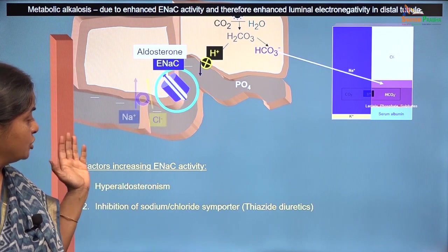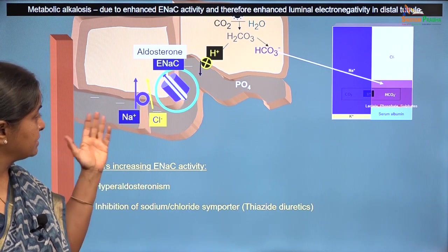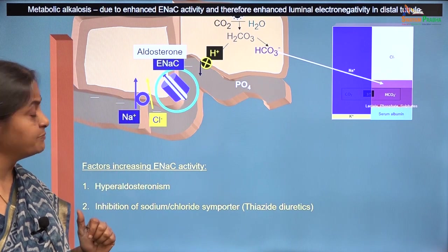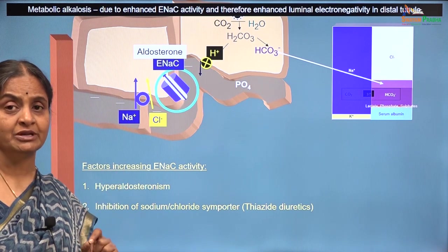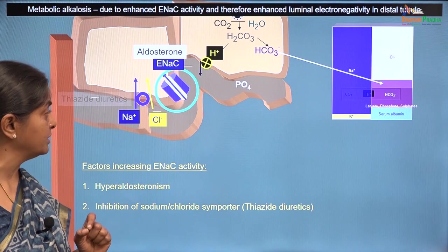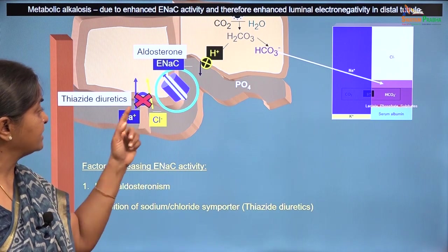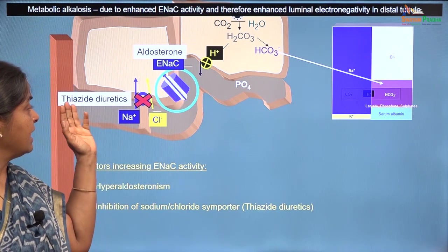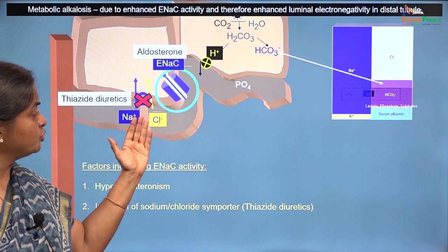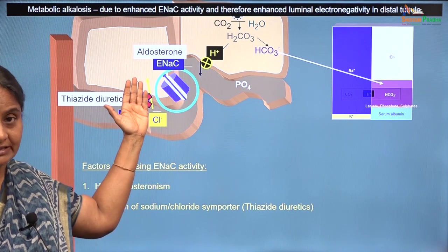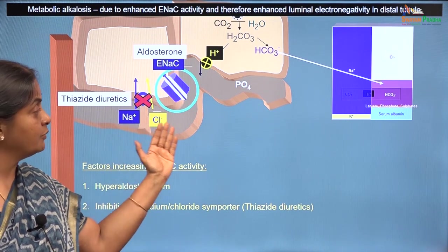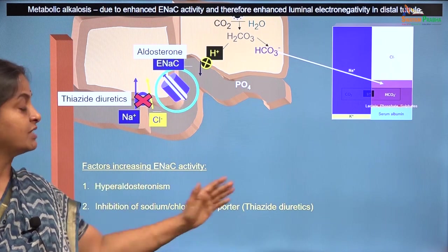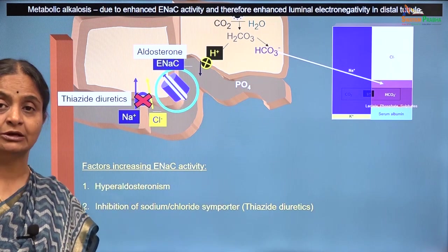The second cause is inhibition of the sodium chloride symporter, which is the other sodium reabsorbing protein in the distal tubule. It can be inhibited by thiazide diuretics. When that happens, the sodium that is normally reabsorbed by this protein will now have to go through the epithelial sodium channel, and that can cause metabolic alkalosis.